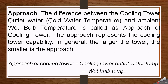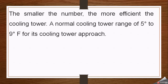The approach represents the cooling tower's capability — how much the tower can reduce the temperature of the hot water coming from the system to produce cold water. In general, the larger the tower, the smaller the approach. Approach is calculated as: cooling tower outlet water temperature minus wet bulb temperature. The smaller the approach number, the more efficient the cooling tower. A normal cooling tower range of 5 to 9 degrees Fahrenheit is used for good operation; if it goes beyond 9, efficiency decreases.